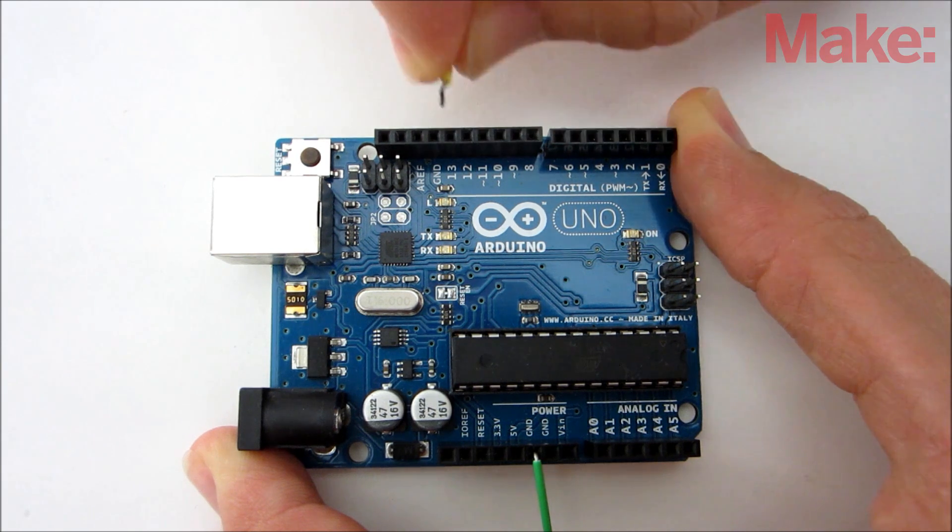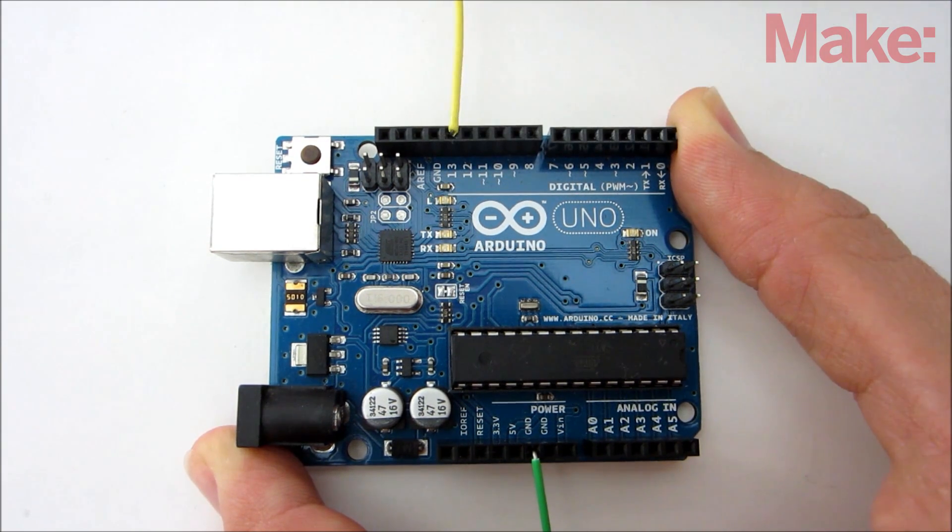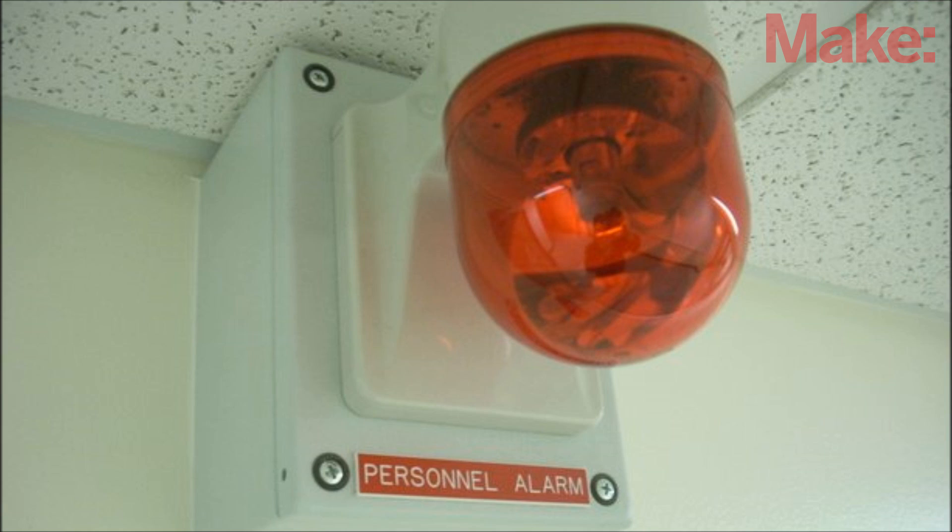For example, if you're using an Arduino, wire it to a digital input pin and use the digital read function to monitor the wire. When it detects a low signal, have it activate the alert system.